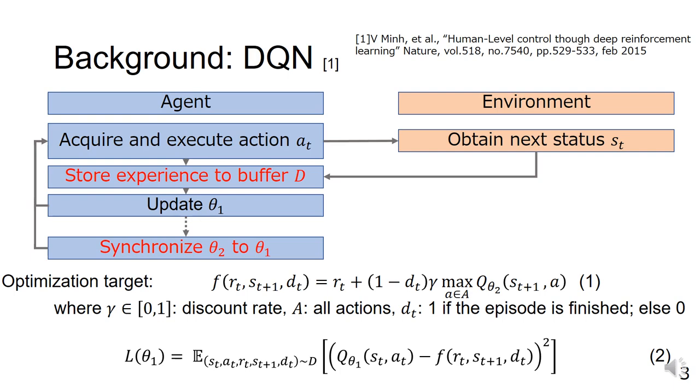To deal with this problem, DQN uses a technique called fixed target network. This technique uses a separate neural network that is parameterized by θ2. For further stabilization, θ2 is fixed for a while and then synchronized with θ1.